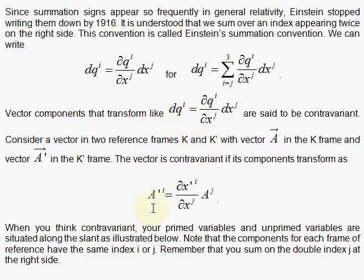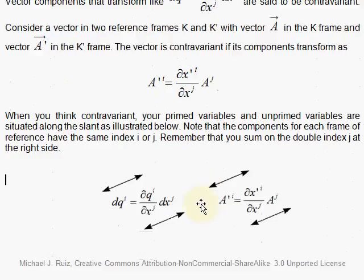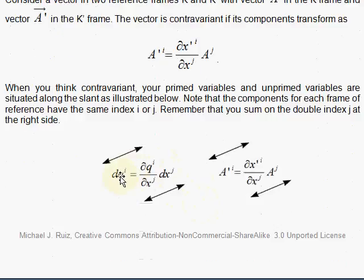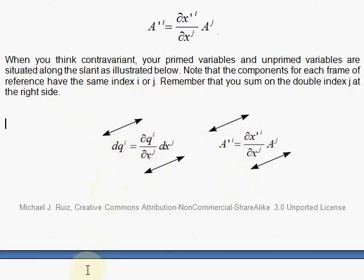So the new variables, the q's, are up here and the old ones are down there. If you want to look at components of a vector, say in a new frame of reference with a prime, a prime of i, and then you have the partials which relate the old ones to the new ones, then once again you have the new stuff here and the old stuff down there. And with this little visualization, this is basically how your contravariant vectors work.